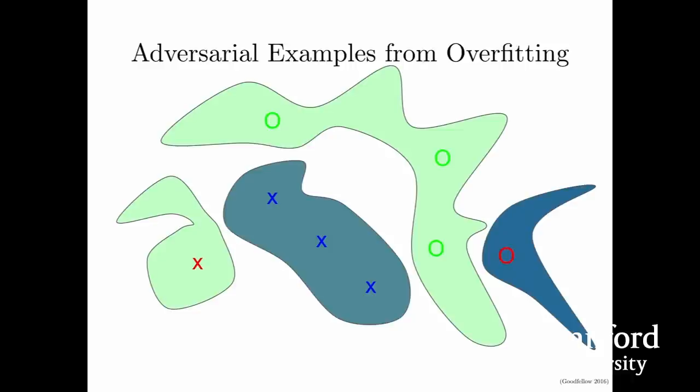But that was not what we found at all. We found that many different models would misclassify the same adversarial examples and assign the same class to them. We also found that if we took the difference between an original example and an adversarial example, we had a direction in input space, and we could add that same offset vector to any clean example and almost always get an adversarial example. So we started to realize there was a systematic effect going on here, not just a random effect.